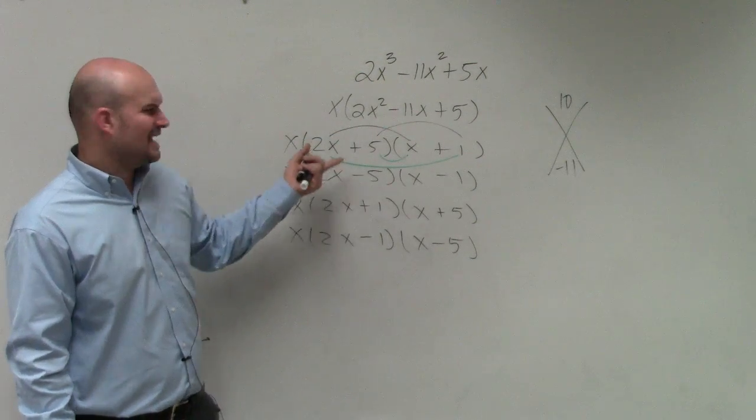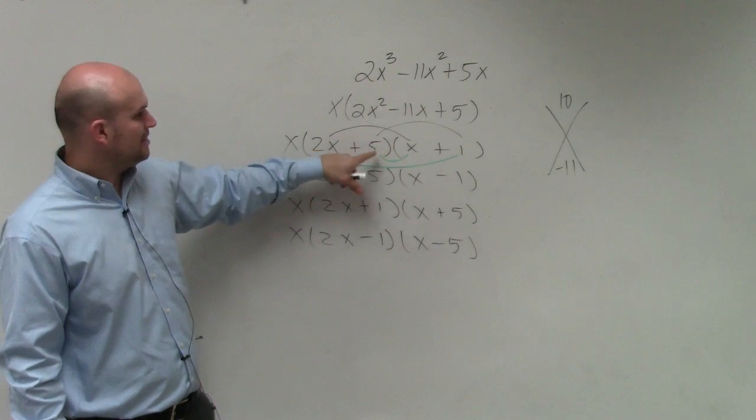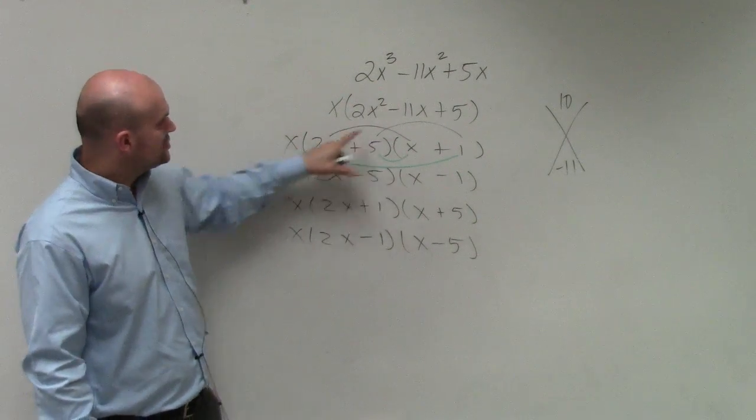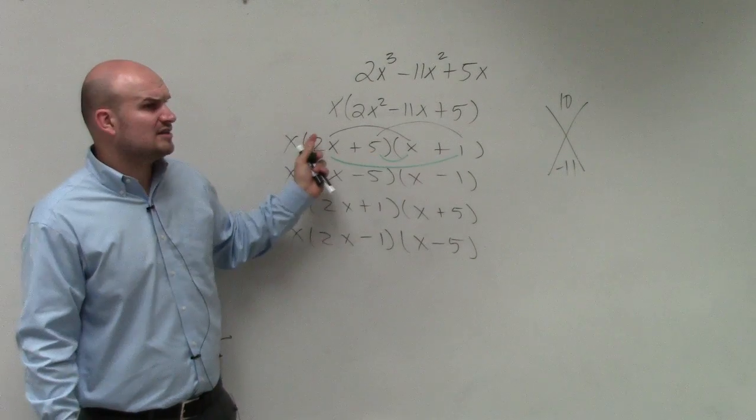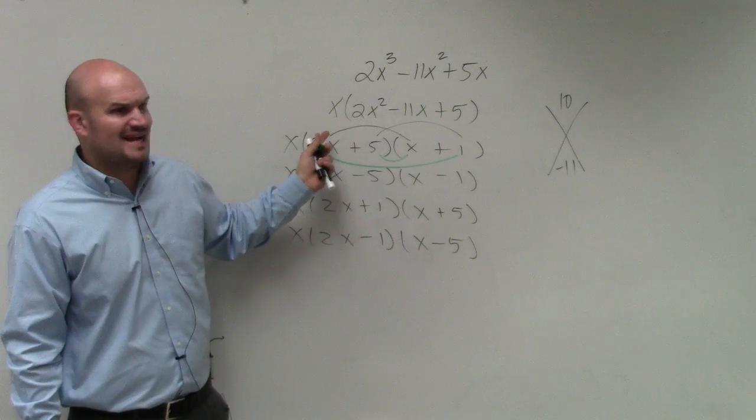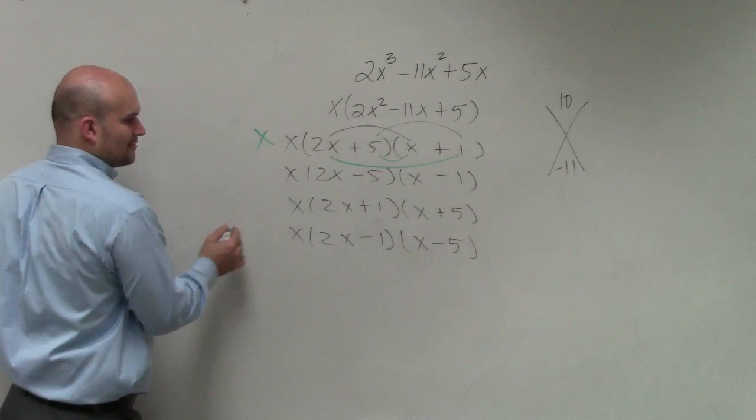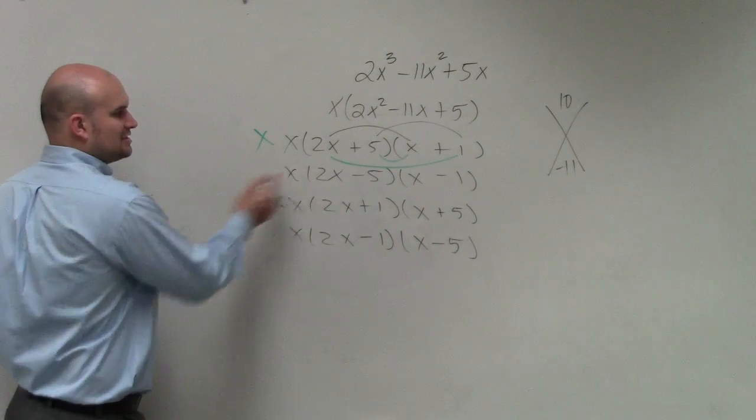Which two factors, when you multiply the inner and multiply the outer and then combine them, give you a negative 11x? Well, obviously, if they're going to add to positives, we know that this one doesn't work, right? Because 5 times x is 5x, 2x times 2 is 2x. 5x plus 2x does not give you a negative 11x. So I know that one's not going to work. I also know that one's not going to work.